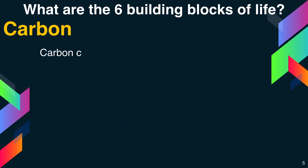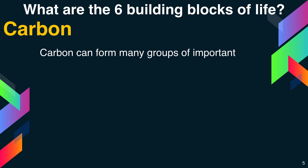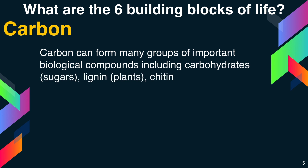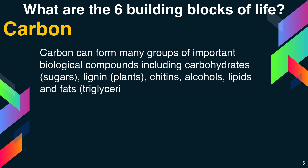Carbon can form many groups of important biological compounds including carbohydrates such as sugars, lignin that is found in plants, chitins, alcohols, and lipids and fats — that is, triglycerides and carotenoids.